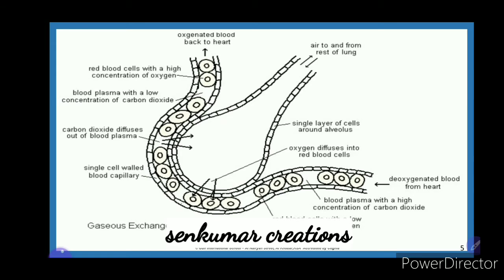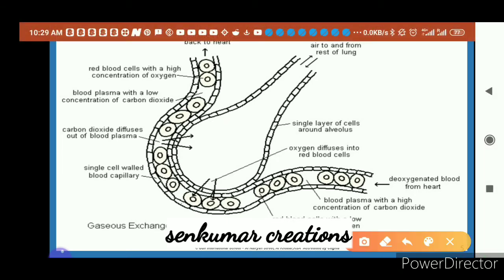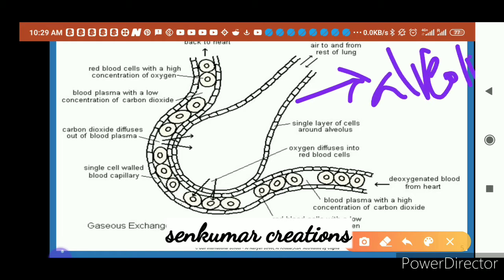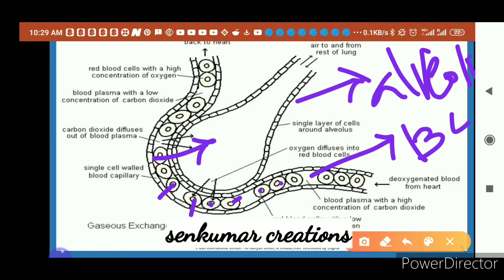Looking at the picture of the alveolus, you can see the different parts clearly. The round structure is the alveolus, and the surrounding part is the blood capillary. The round cells shown inside the blood capillary are red blood cells. Carbon dioxide diffuses from the blood capillary into the alveolus, while oxygen diffuses from the alveolus into the blood capillary, as it contains a higher quantity of oxygen.